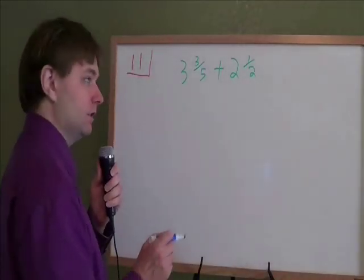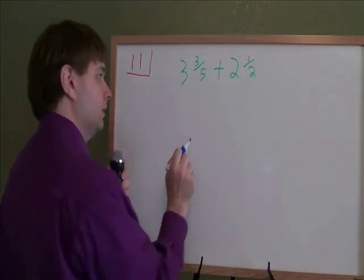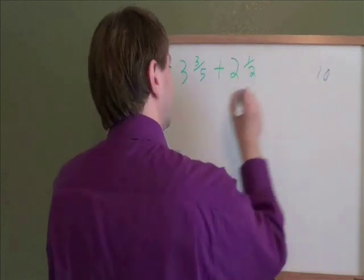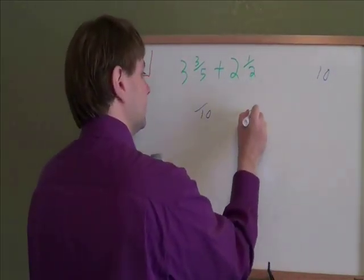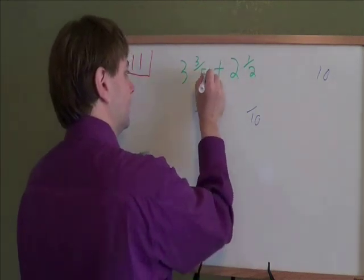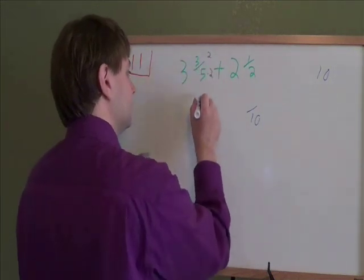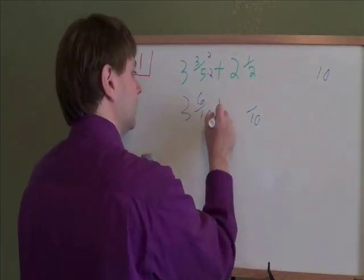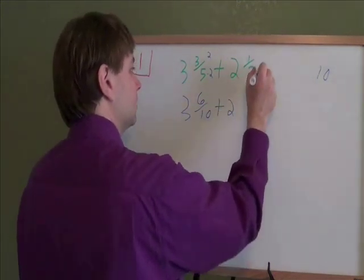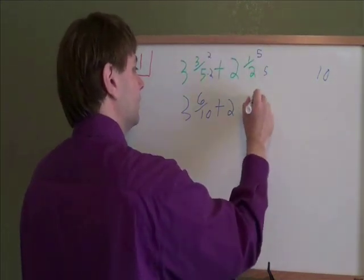On this problem we are adding fractions. And if we're adding or subtracting fractions, we need a common denominator. The quickest way to get one is just to multiply your denominators. 5 times 2 is 10. I need to make everything into tenths. So to turn 3/5 into tenths, I need to multiply by 2. 5 times 2 gives me the 10. And 3 times 2 gives me the new numerator of 6. To turn halves into tenths, we need to multiply by 5. 2 times 5 is 10. 1 times 5 gives you 5.